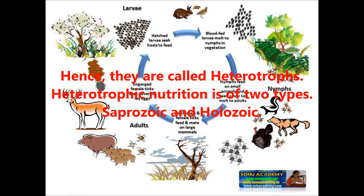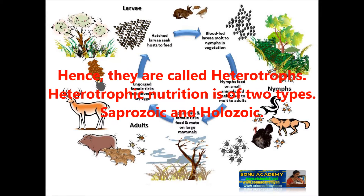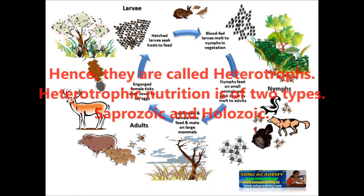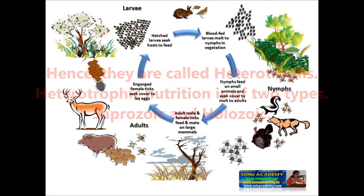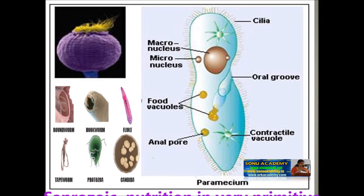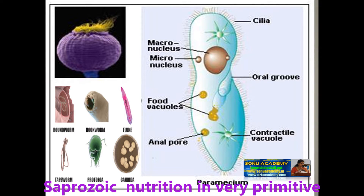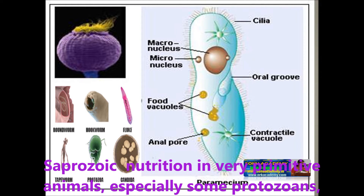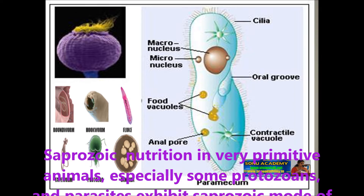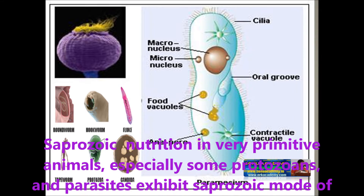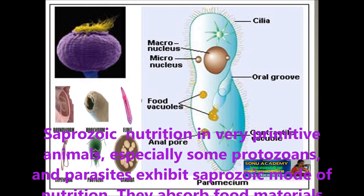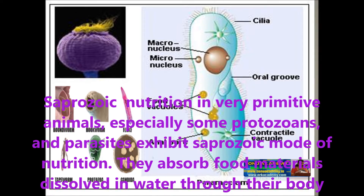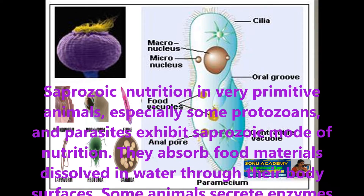Heterotrophic nutrition is of two types: saprozoic and holozoic. In very primitive animals, especially some protozoans and parasites, exhibit the saprozoic mode of nutrition.